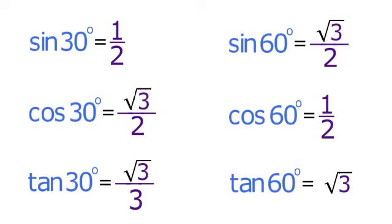To begin memorizing them, it is helpful to note that both the sine of 30 degrees and the cosine of 60 degrees both equal 1 half, and that all of the other ratios include the value radical 3.